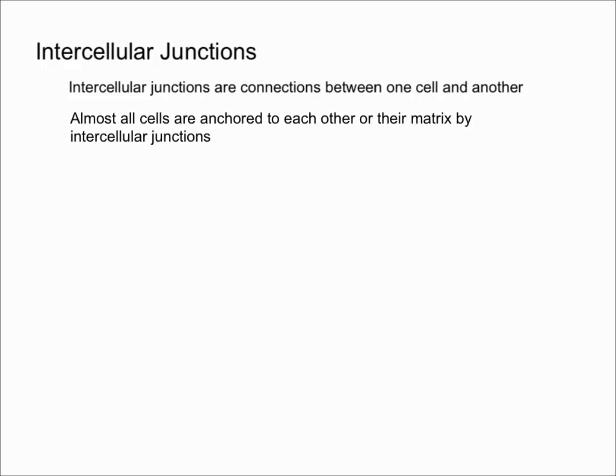There are only two types of cells that are not anchored, and those cells are blood and metastatic cancer cells. Additionally, intercellular junctions help cells resist stress and allow them to communicate with each other.